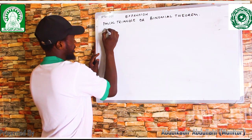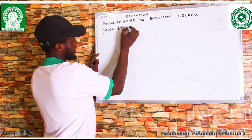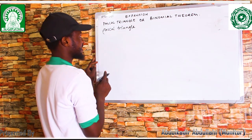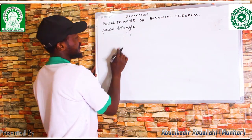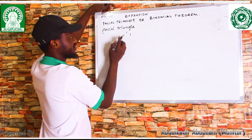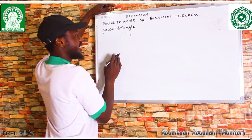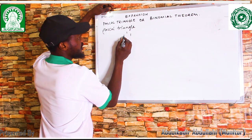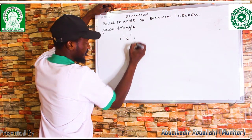Let's see how to generate Pascal's Triangle first. To generate Pascal's Triangle, we start with 1, 1. To get the next row, when the power is 2, the coefficients are given as: you drop a 1 here, you add these numbers — 1 plus 1, you get 2 — then you close with 1.